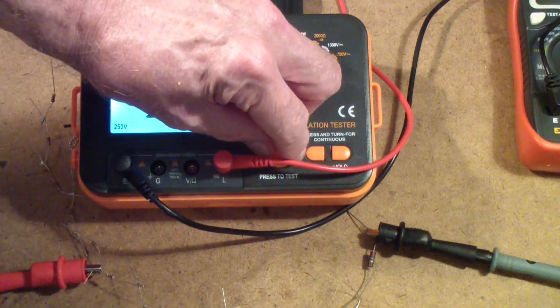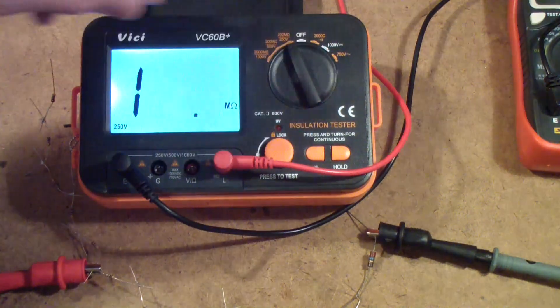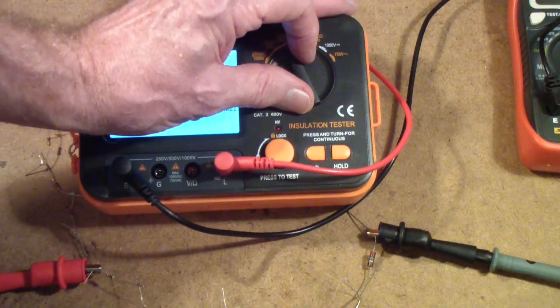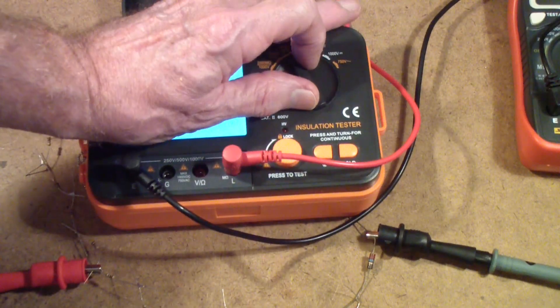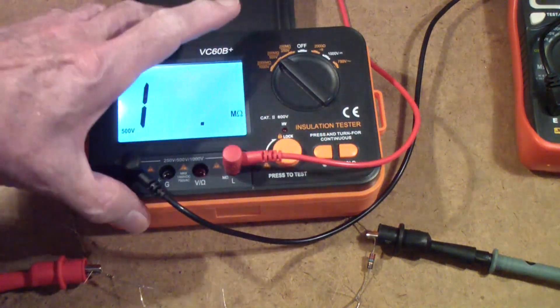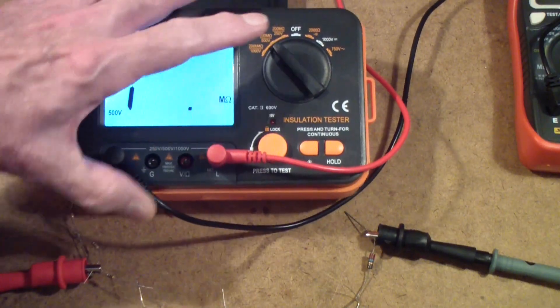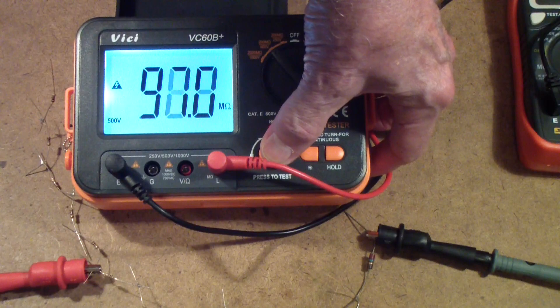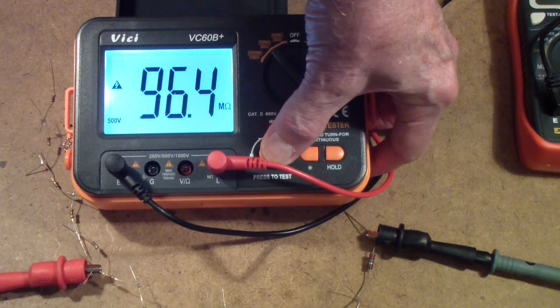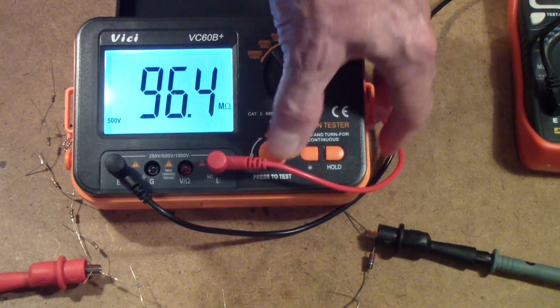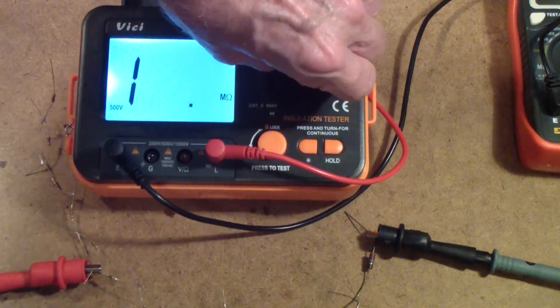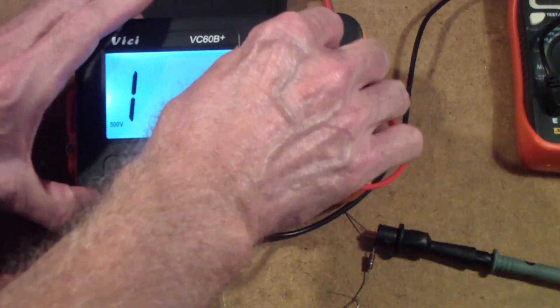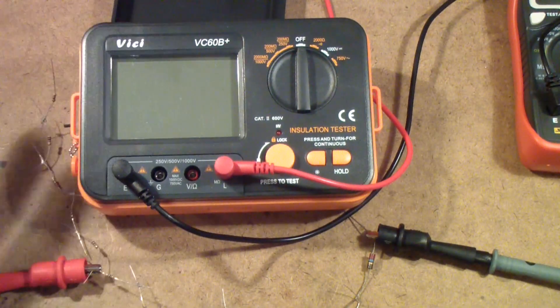So that seems to work quite well. I'm going to try 500 volts. These resistors should be able to take that. And we get about the same reading, about 96 megaohms. So we're going to come back to this meter in a little bit.